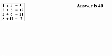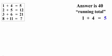The puzzle should be interpreted as a running total where you add up the numbers from each line. The first line of 1 plus 4 equals 5 is a correct mathematical result.